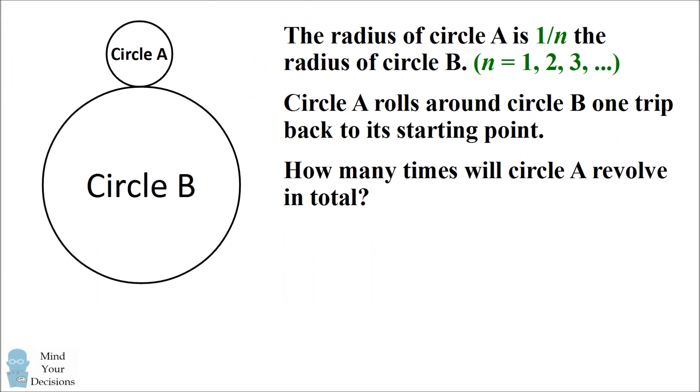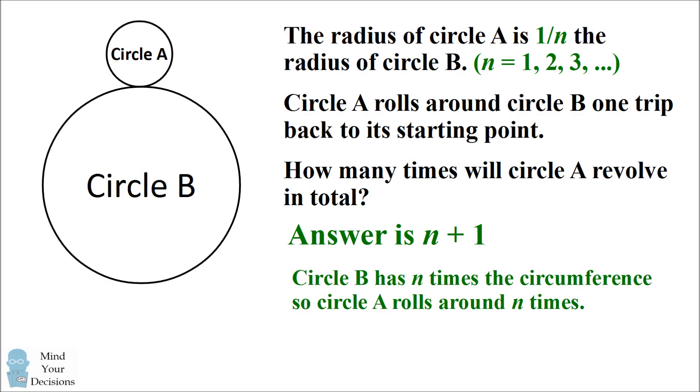So we can solve this problem and we'll see the correct answer is that circle A will roll around n plus one times. The reason is that circle B has n times the circumference and that will account for n times that circle A revolves around itself. But then we will also get one more revolution because circle A is also revolving around the center of circle B. So the correct answer is n plus one.